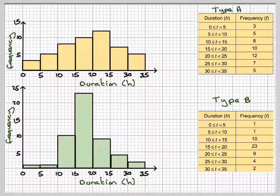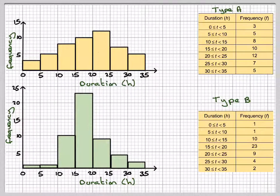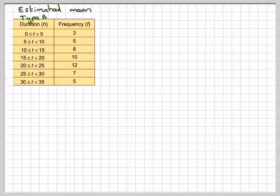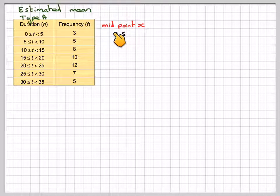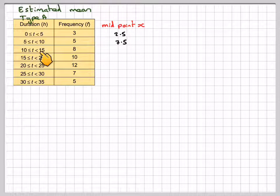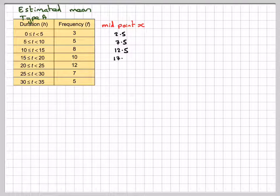We can only calculate an estimate for the mean because some of the original data has been lost. So, this is how you would do it manually. Estimated mean for type A. You've got the midpoint, which we call X. The midpoint between 0 and 5 is 2.5. The midpoint here is going to be 7.5. The midpoint here is going to be 12.5 and so on.